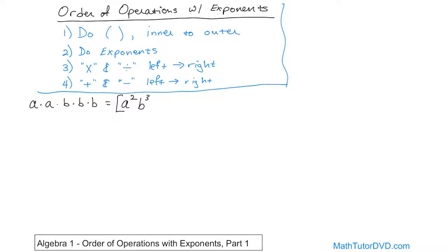Well, you write it as a squared, because that's multiplied by itself twice, times b cubed — written as b to the power of three, because it's multiplied by itself three times. You don't need a multiplication symbol in the middle, because when you write two variables next to each other it automatically means multiplication. You can also write this as b cubed a squared — it's the same exact thing. Three times four is the same as four times three, so a squared times b cubed is the same as b cubed times a squared. Flipping the order doesn't matter for multiplication.